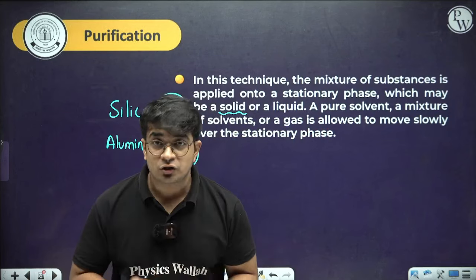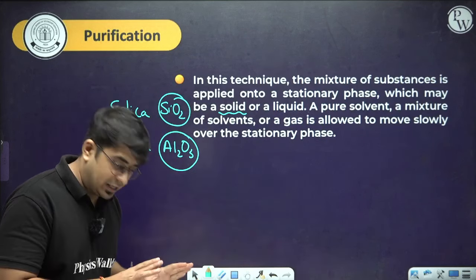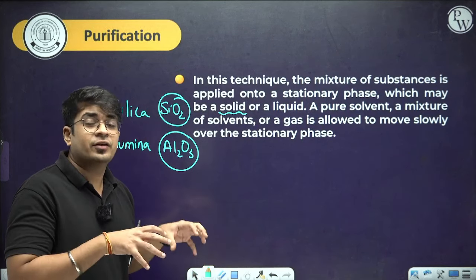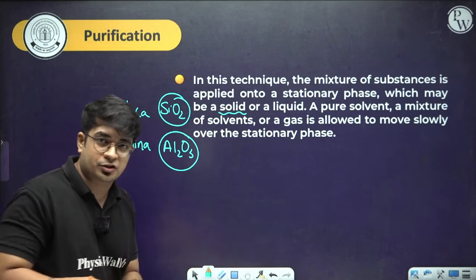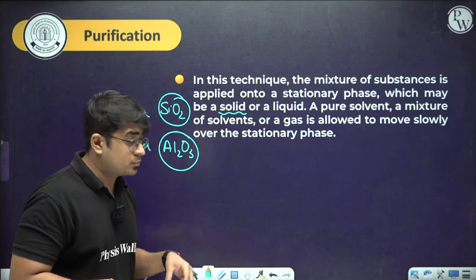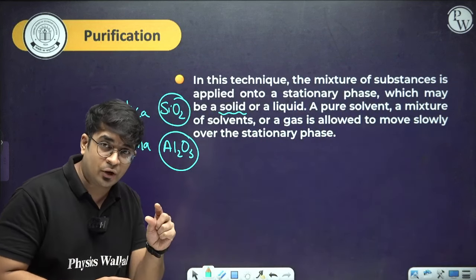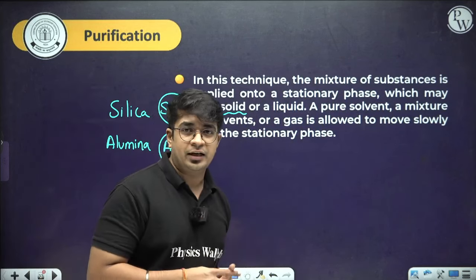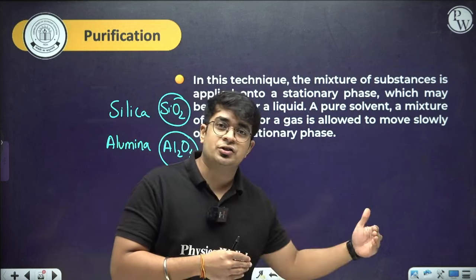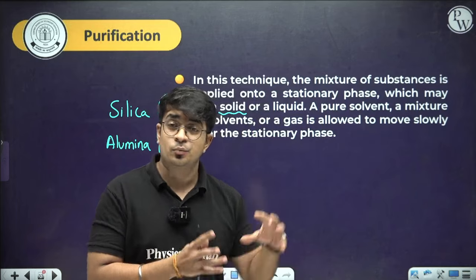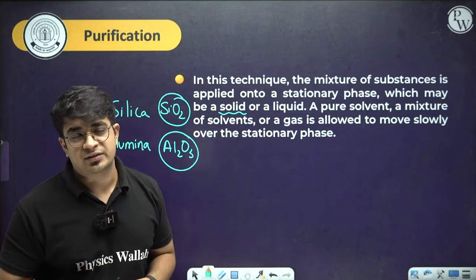The principle of chromatography: components with more affinity for the mobile phase move forward with it, while those with less interaction remain behind. This is like a race — the component attracted more to the mobile phase moves fast like a rabbit, while those attracted more to the stationary phase move slowly like a turtle. By this process the components of the mixture are separated.